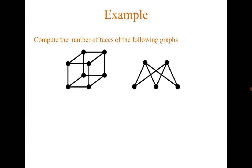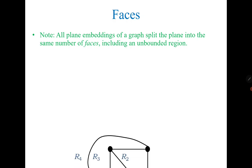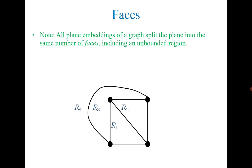Quickly try to compute the number of faces of the following graphs. For the first one, the answer is six — you can count one, two, three, four, five, six. For the second one, the answer is three: two interior faces and one exterior face. As for a tree — recall that a tree is a connected graph with no cycles — it has only one face.